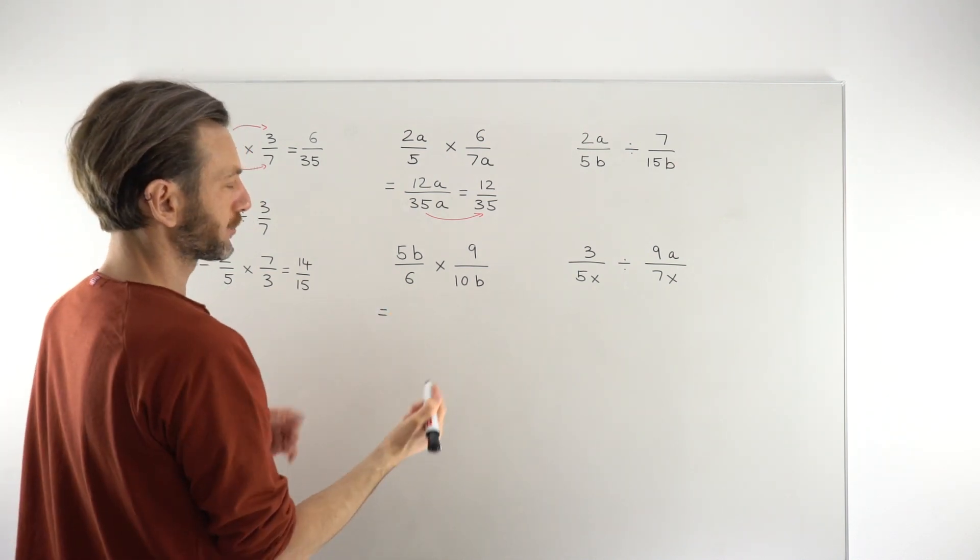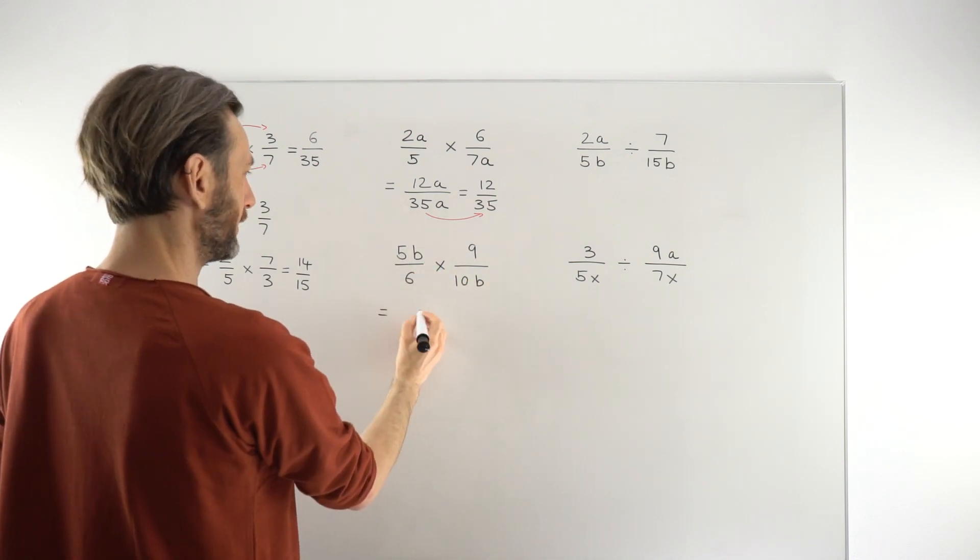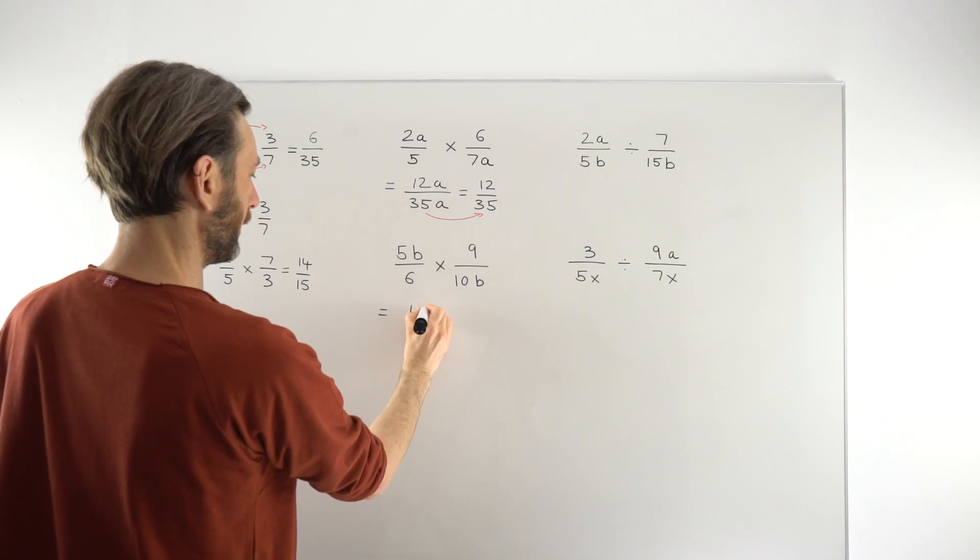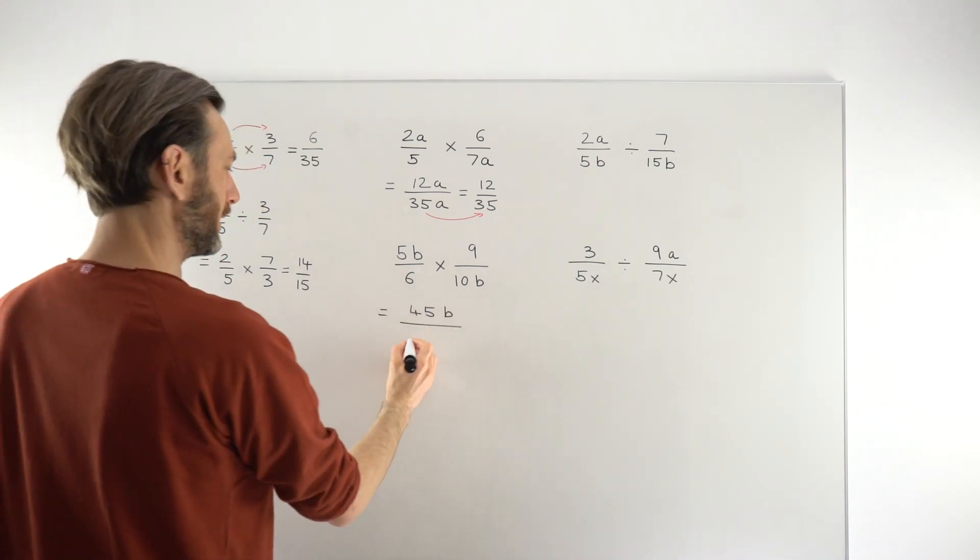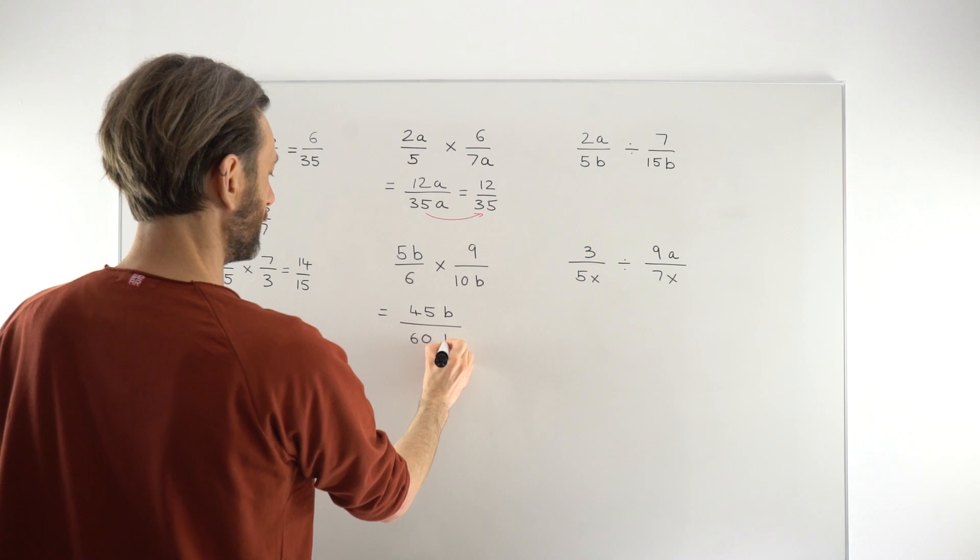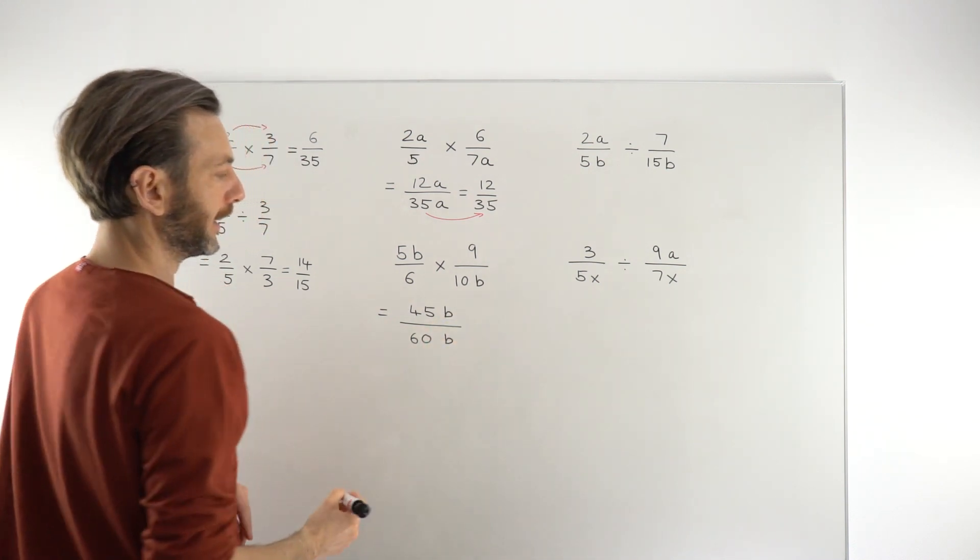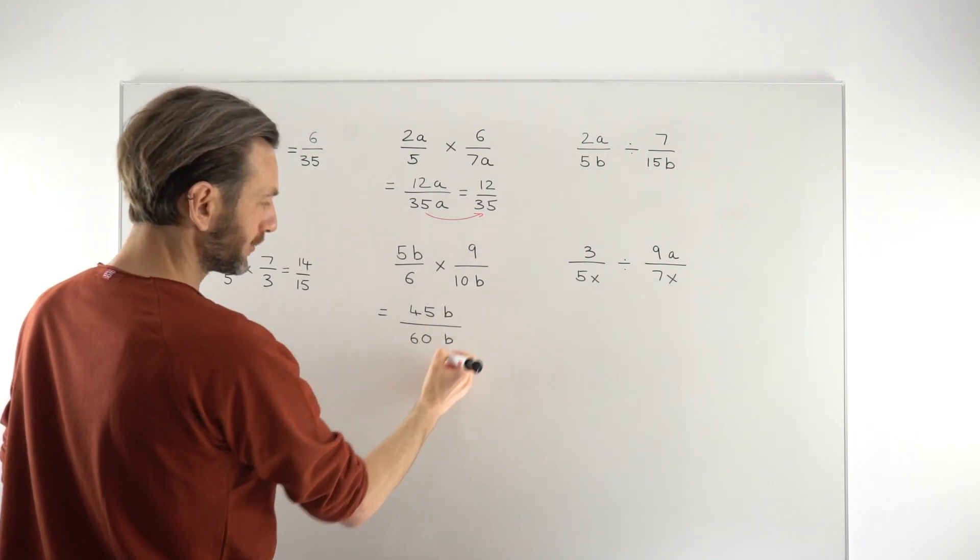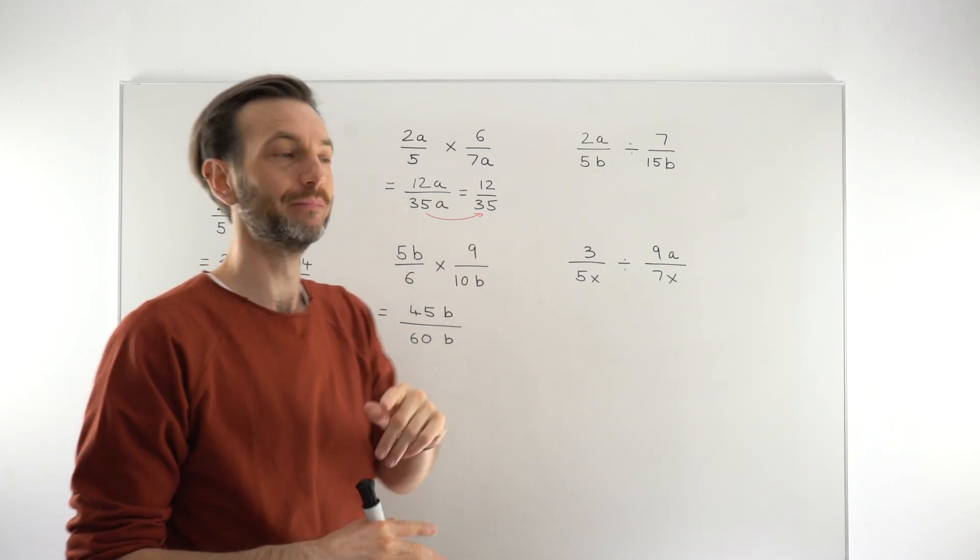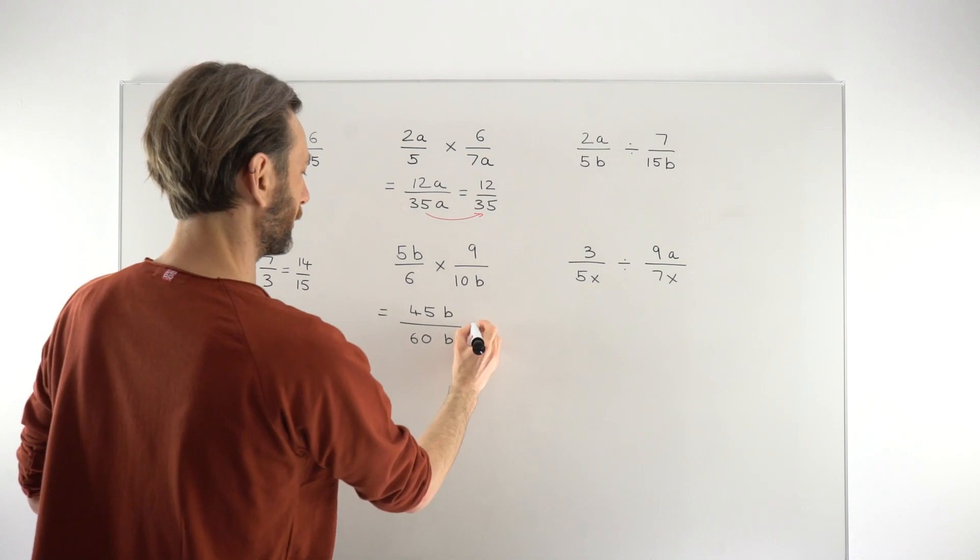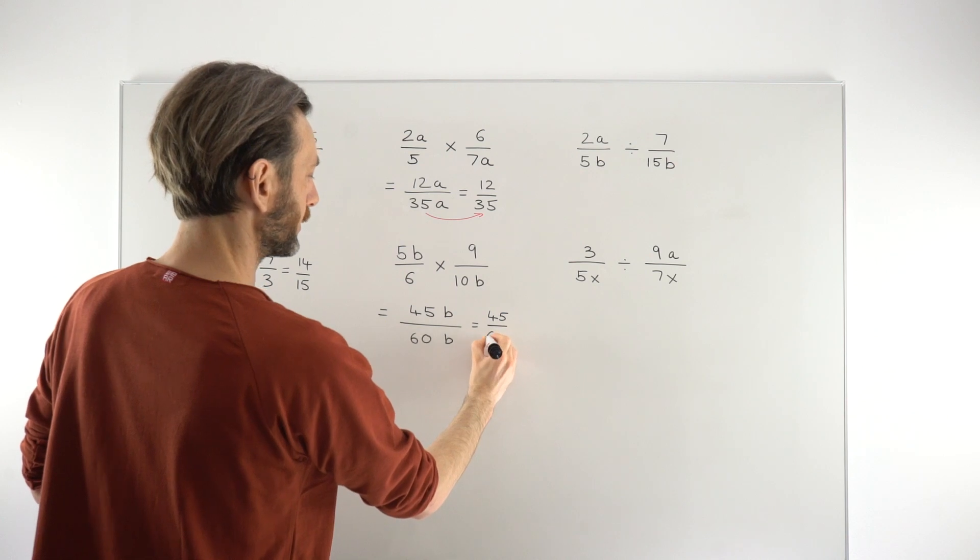Okay, so moving on, let's have a go at this guy. Same sort of scenario. So, 5b times 9 is going to give us 45b. And then on the denominator, 6 times 10b is going to give us 60b. So you can see immediately that the b's are effectively going to cancel. It's very tempting to just cancel them. I mean, you can just cancel them, but just remember you're only canceling them because you're dividing top and bottom by b. That's why they're canceling. So they're effectively going to disappear, and that's going to leave us with 45 over 60.